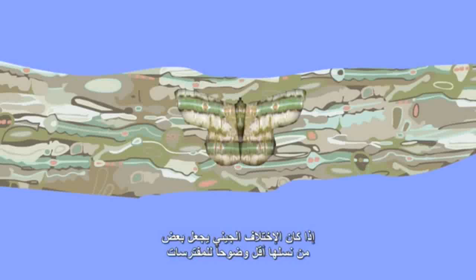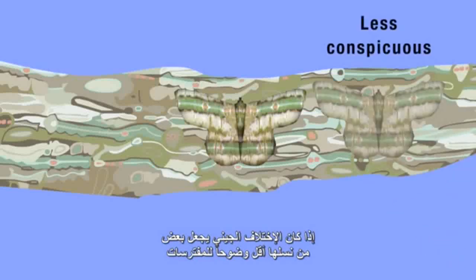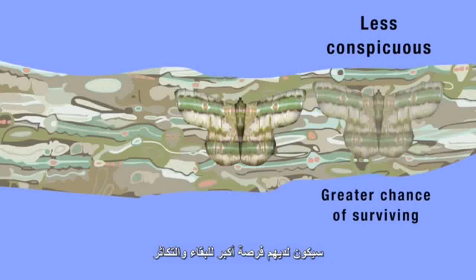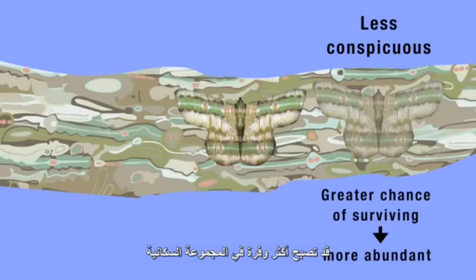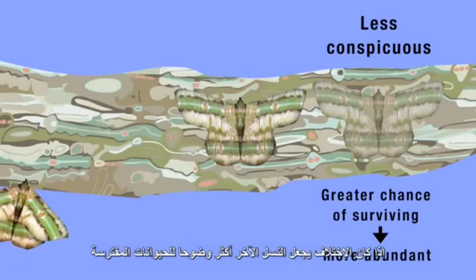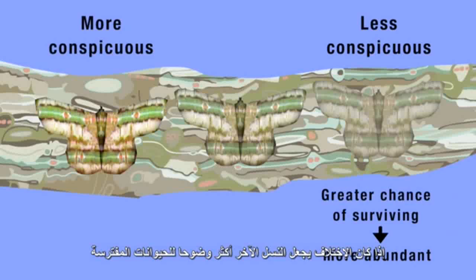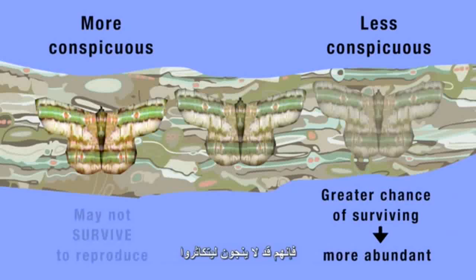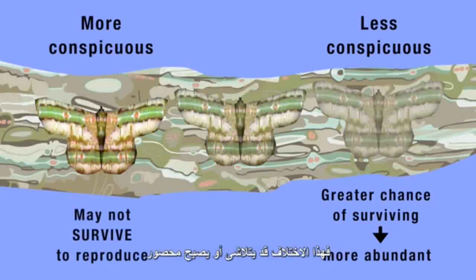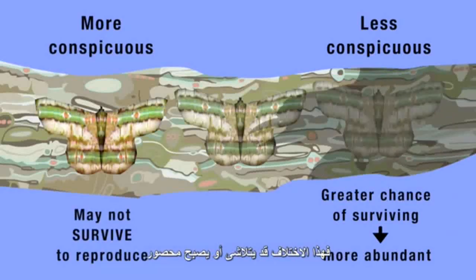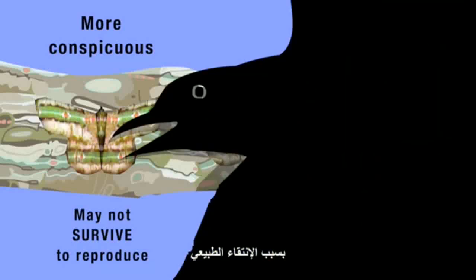Take this insect. If genetic variation makes some of its offspring less conspicuous to predators, they'll have a greater chance of surviving and reproducing, and in the course of time, the insects with this variation may become more abundant within the population. If the variation makes other offspring more conspicuous to predators, they may not survive to reproduce, and the variation may vanish or become suppressed because of natural selection.